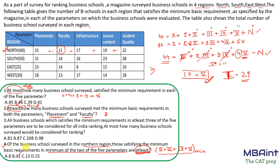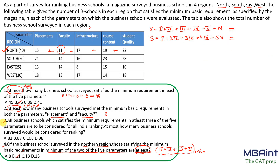Question three: all business schools satisfying the minimum requirements in at least three of the five parameters are considered for all-India ranking. At most how many business schools surveyed would be considered? We need the maximum value of exactly3 + exactly4 + exactly5 across all regions. To maximize this term, we give maximum value to exactly3, because it has the lowest coefficient, allowing us to accumulate more schools in total.